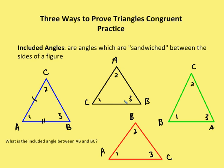What is the included angle between AB and BC? That depends on the figure and where those sides are located. For the blue triangle, the included angle between AB and BC is angle three. For the black triangle, AB and BC give an included angle of three as well. For the green triangle, the included angle between AB and BC is angle one. And for the red triangle, the included angle between AB and BC is angle two. So an included angle is the angle sandwiched between the sides of the figure.